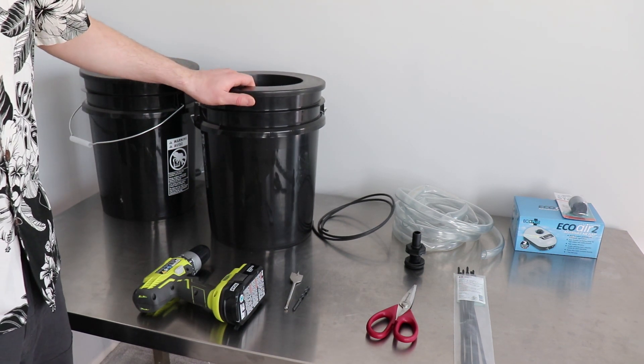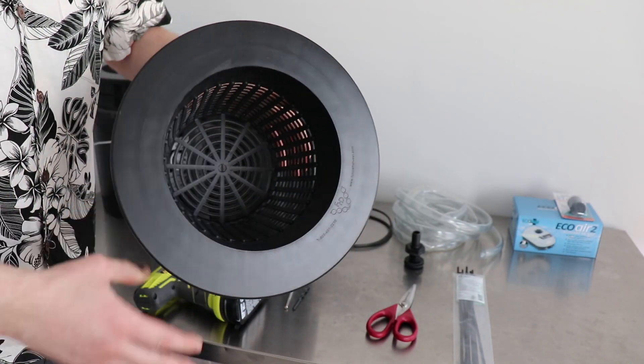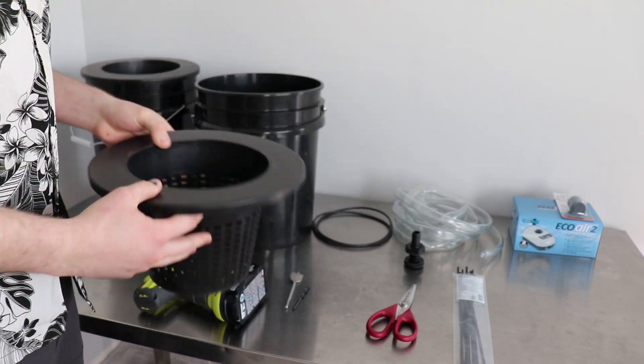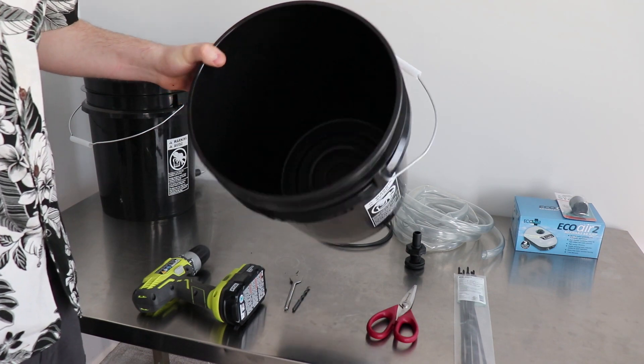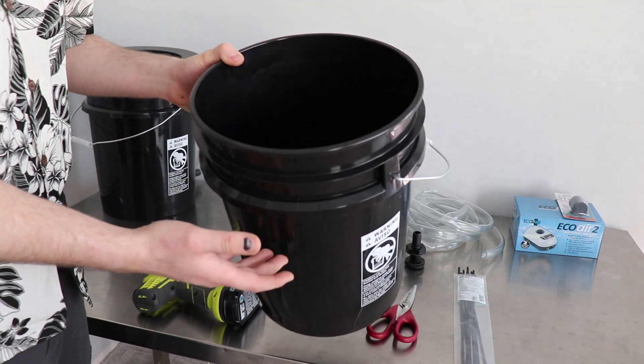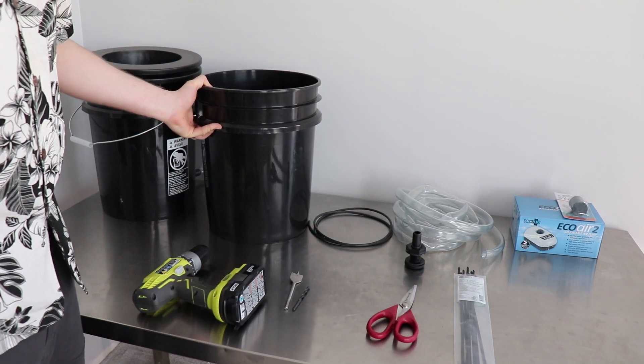What you'll need is a net cup lid. I like the 8 inch ones, provides a lot of support for the plant. A 5 gallon bucket, you can pick that up at any hardware store. I find if you go to the hydroponic stores they have the black ones that won't let any light through.